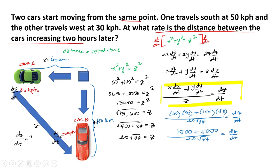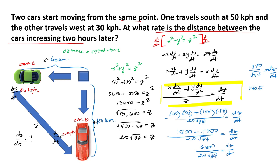So dz/dt equals 6800 over 20 square root of 34. Simplifying, 6800 over 20 is 340, giving us 340 over square root of 34. Rationalizing, we get 340 square root of 34 over 34, and simplifying 340 over 34 gives us 10 square root of 34, which is approximately 58.31 kilometers per hour.